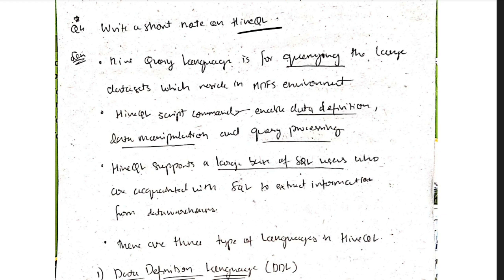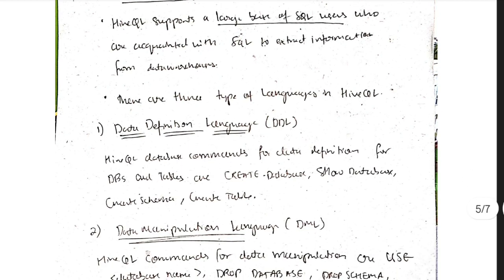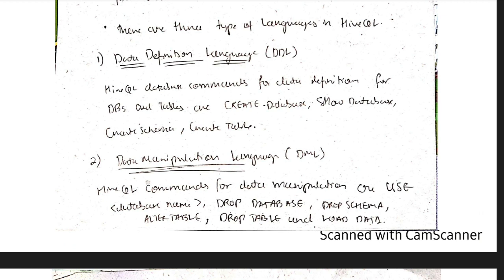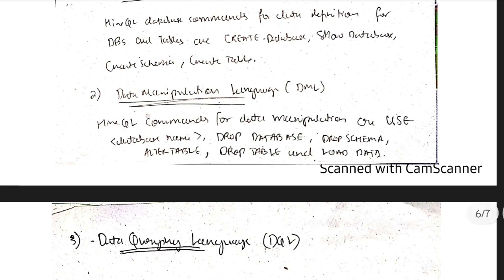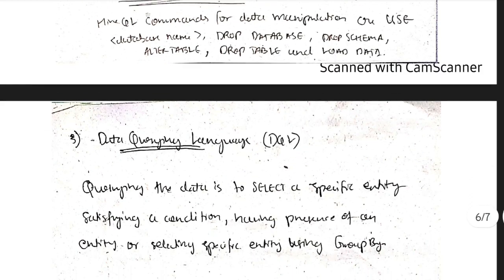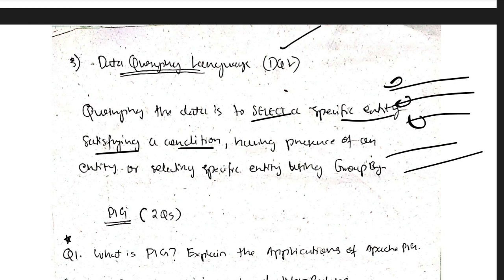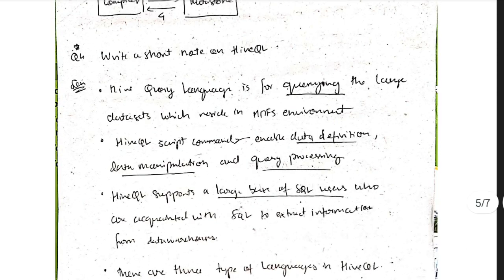HiveQL is a querying language used for data definition, data manipulation, and querying. Data Definition Language (DDL) includes commands like: create database, show database, create schema, create table. Data Manipulation Language (DML) includes: drop database, drop schema, alter table, drop table, load data, use database. Data Querying Language is used to select specific entities satisfying a condition — selecting rows from a table.